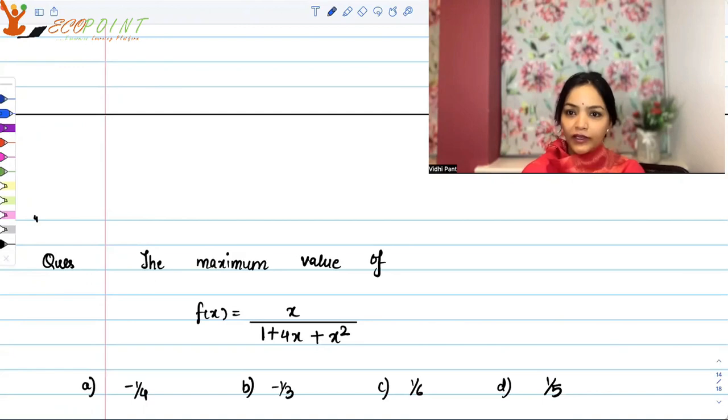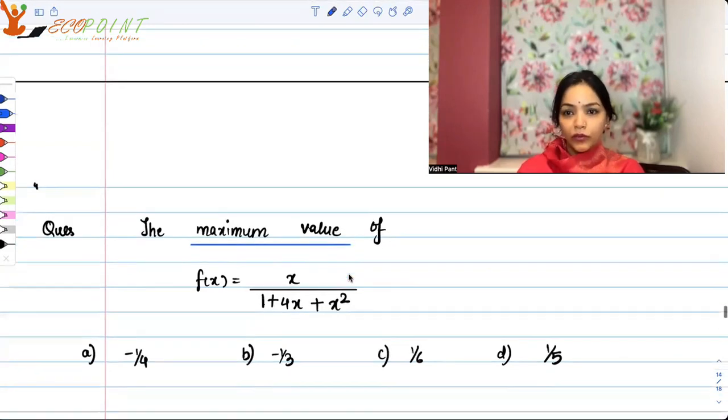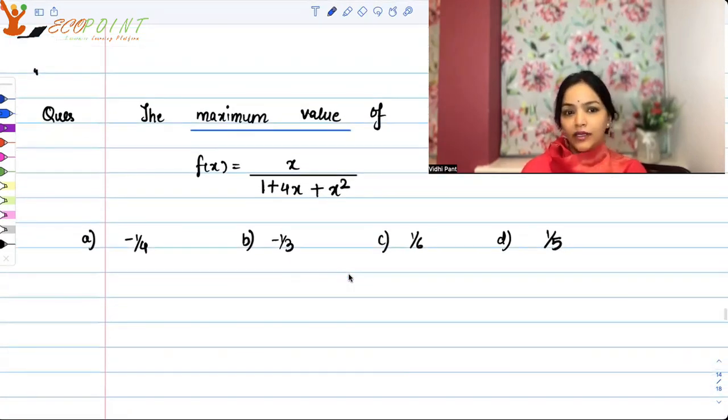Let's first find the maximum value of the function x upon 1 plus 4x plus x squared and the values are given. Mind you, you have to be particular in these kind of questions. Are they asking you where you are getting the maximum or are they asking you for the maximum value? In this question I'm asking you maximum value. So you'll have to figure out where you're getting maximum and then what the value turns out to be of the function. So is it minus 1 by 4, minus 1 by 3, 1 by 6, 1 by 5? What it turns out to be.